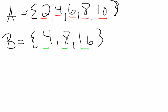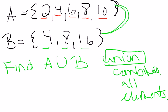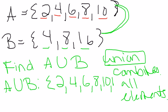So now let's talk about how can I find A union B. If you remember, the definition for union meant we're looking for what combines all elements. So basically I want to include all of the elements listed here. So I'm going to say A union B is I have a 2, a 4, a 6, 8, 10, and 16.